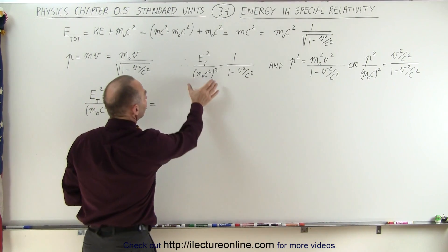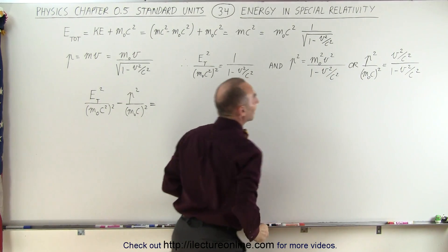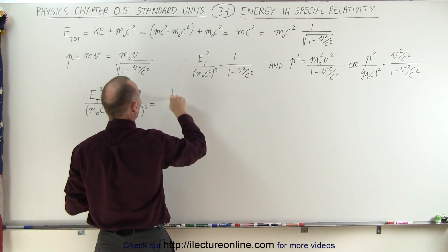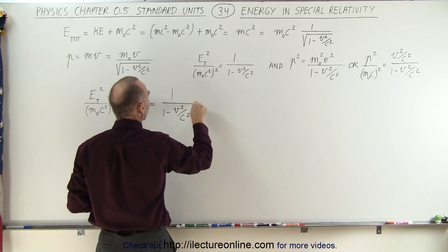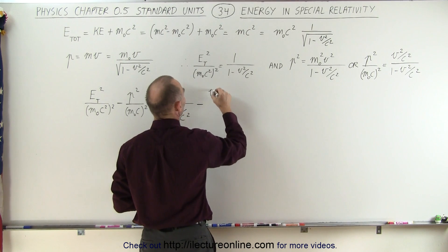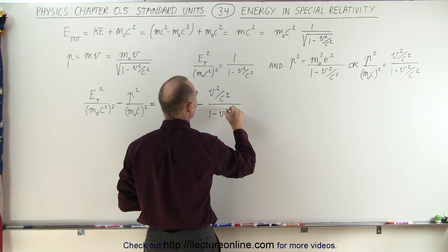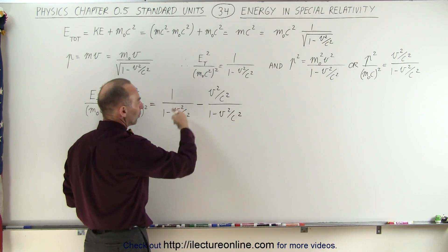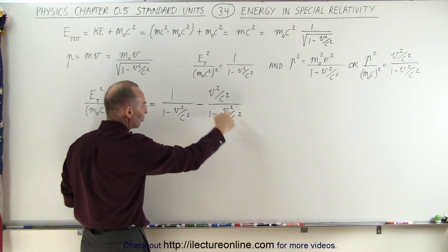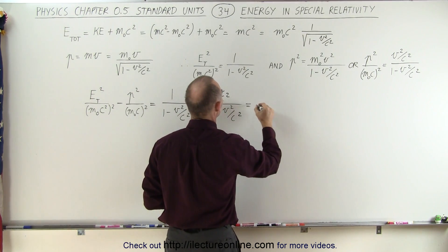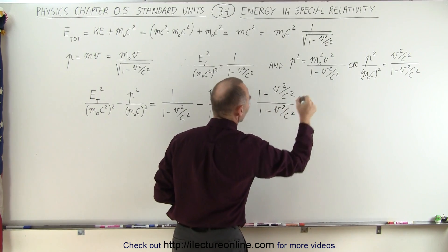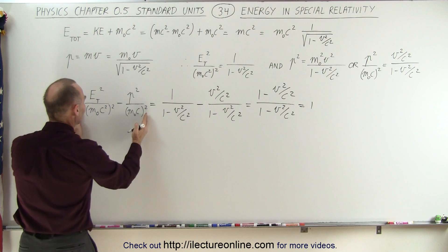Now we take the energy quantity and subtract from it the momentum quantity, and let's see what we end up with. On the right side, we have 1 divided by 1 minus v squared over c squared, minus v squared over c squared divided by 1 minus v squared over c squared. Since they share a common denominator, we can write it as 1 minus v squared over c squared divided by 1 minus v squared over c squared, which equals 1.